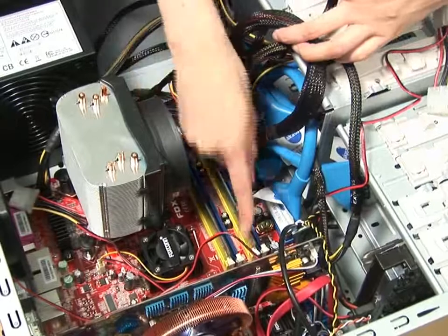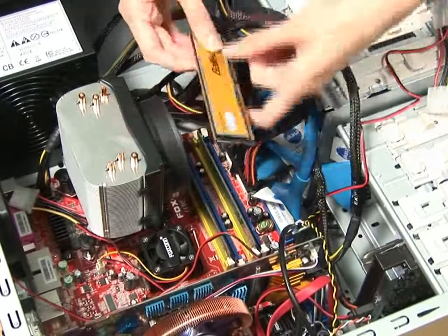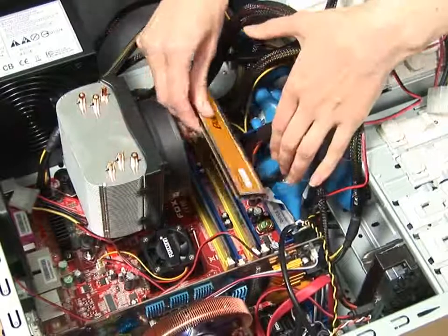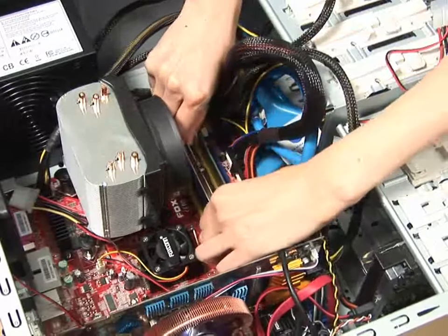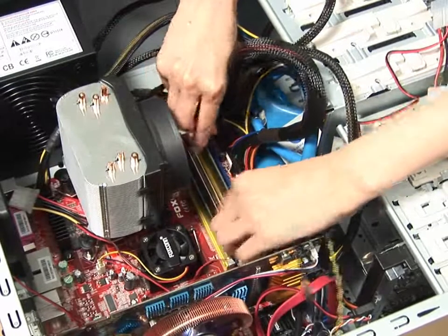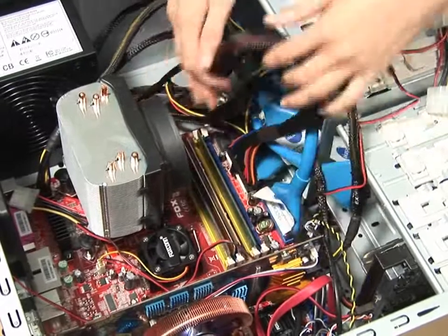Same technique again. Push down these switches. And then as with the DDR, same thing with the DDR2. Just line up the notch. Make sure you've got the long part over the long part. Slip it in. And then just push down. And those clips snap into place.